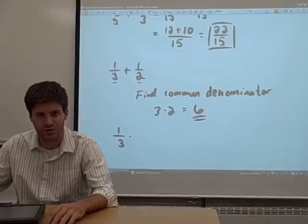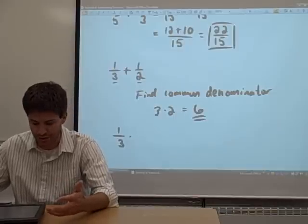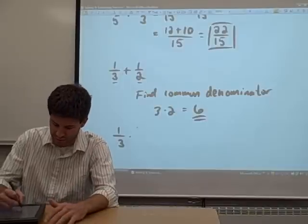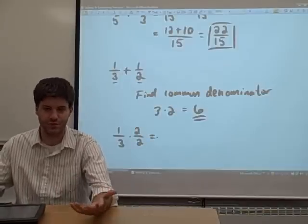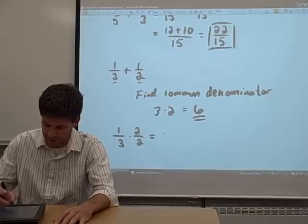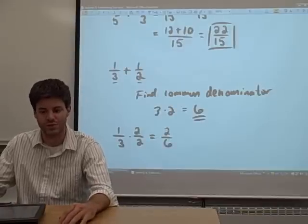So one-third. We want to take this one-third and we want to turn it into a fraction that has a denominator of six. The way that we do this is we just multiply by two. That's how we got the six in the first place. We multiply it by two. So we multiply straight across and we get one-third equals two-sixths.